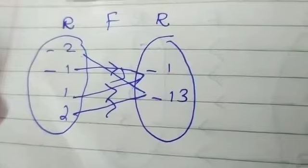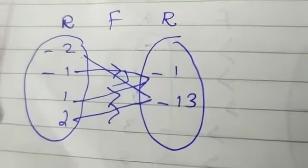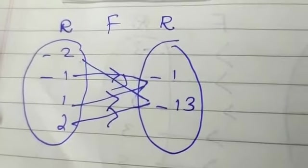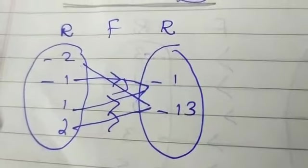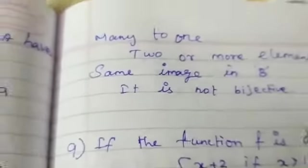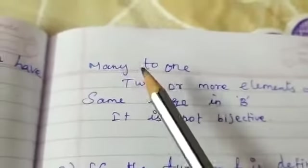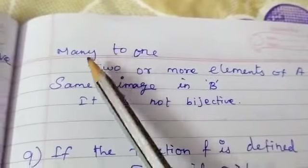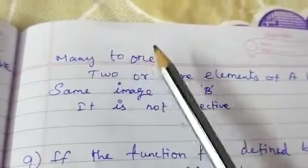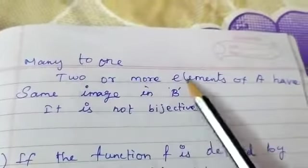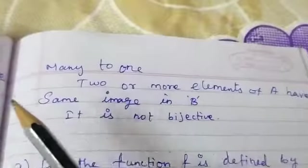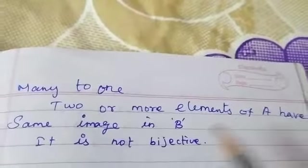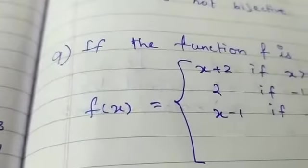The arrow diagram for this function shows that it is a many-to-one function — two or more elements of A have the same image in B. So this function is not bijective.